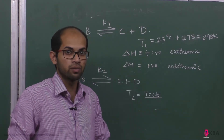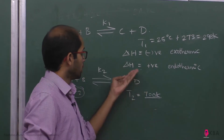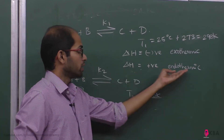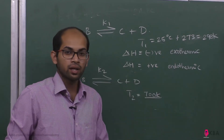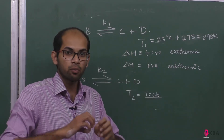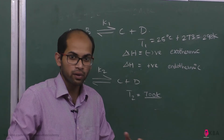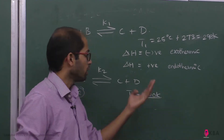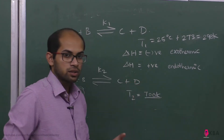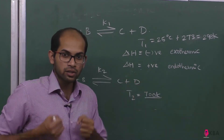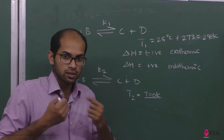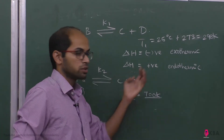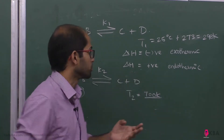A negative delta H means the reaction is exothermic. If delta H is positive, the reaction is endothermic — for example, when we break down a compound by supplying heat, delta H is positive.